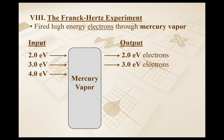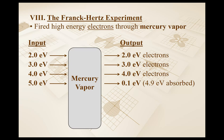How about 5.0 electron volts of kinetic energy? Now something actually happens. When the electron leaves the mercury vapor, it's moving quite a bit slower. In fact, it's only carrying 0.1 electron volts of kinetic energy, which tells me that something happened in the mercury vapor where it absorbed 4.9 electron volts. 5.0 minus 0.1 is 4.9.